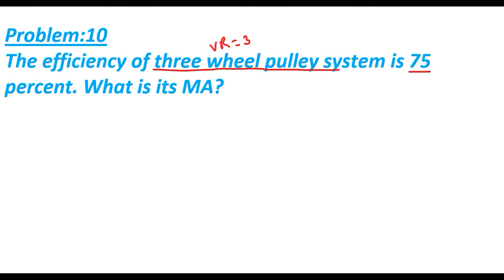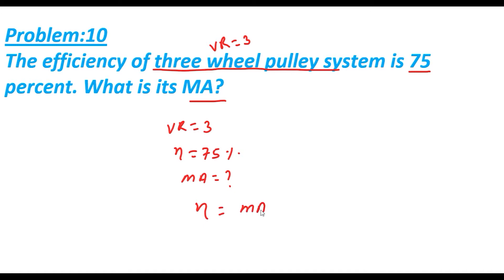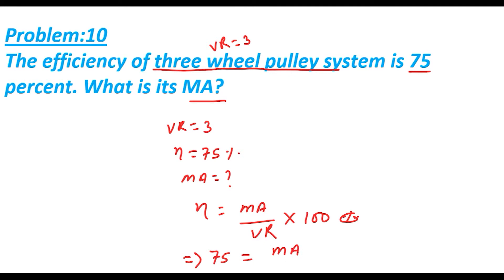Efficiency is given as 75 percent. So VR is given as 3 and efficiency is given as 75 percent, and we have to find the MA — mechanical advantage. We know that efficiency is given by MA divided by VR, multiplied by 100 percent. So 75 percent equals MA divided by VR, which is 3, multiplied by 100.